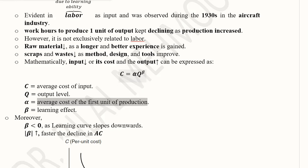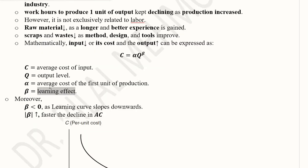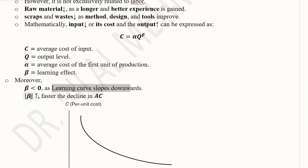Alpha (α) is the starting point — the average cost of the first unit produced — and we monitor average cost across preceding units of output to see how it declines. The power beta (β) is the most important parameter in this topic. Beta must be less than zero — it is negative — because the learning curve should slope downwards to show decline in average cost. When the absolute value (magnitude) of beta increases, the decline in average cost becomes faster.